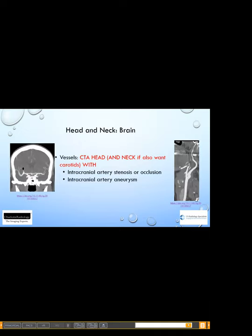For vessels in the brain, we use CTAs of the head — CT arteriograms or angiograms — and those are always done with contrast. We can look for intracranial artery stenosis or occlusion, or intracranial aneurysms. The picture on the left shows a tiny aneurysm in the right MCA. On the right side of the screen, as you ascend in the internal carotid artery, there is an abrupt cutoff — you can see the occlusion there.